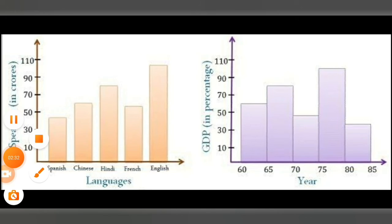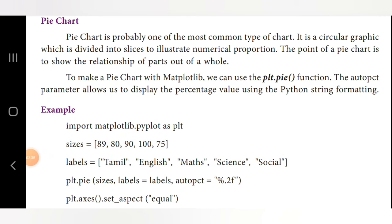Now we move to pie charts. A pie chart is probably one of the most common types of chart. It is a circular graphic divided into slices to illustrate numerical proportions. The purpose of a pie chart is to show the relationship of parts to a whole. To make a pie chart with matplotlib we use the plt.pie function. The autopct parameter allows us to display percentage values using Python string formatting.